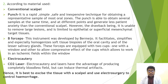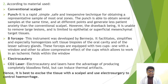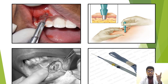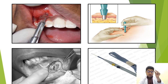CO2 laser and electrocautery have the advantage of producing a completely bloodless field but can introduce thermal artifacts. Hence, it is best to excise tissue with the scalpel and use electrosurgery only to control hemorrhage. The instruments shown include the scalpel, a punch biopsy device, the B-forceps — where one side cuts and the other grips the tissue — and the laser.